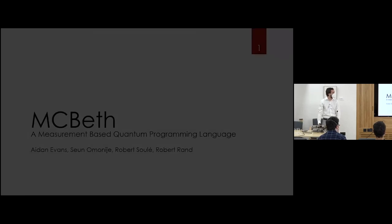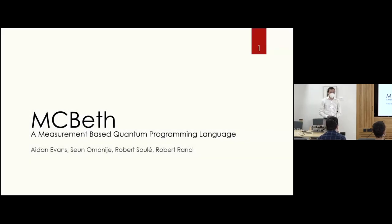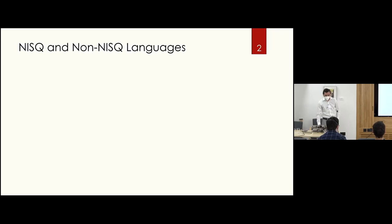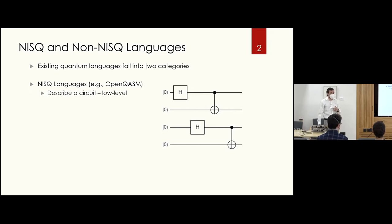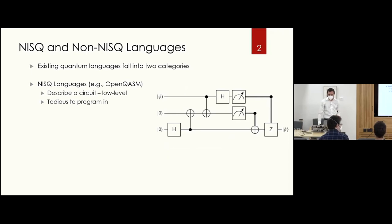Next up we have Aidan Evans talking about MACBETH, a measurement-based quantum programming language. There are many quantum languages and these fall into two categories. First, NISC languages such as OpenQASM describe circuits at a very low-level representation; they are also quite tedious to program in. For example, a standard teleportation circuit has a Hadamard, a couple of CNOTs, another Hadamard — it's very verbose and it's not clear at first glance that it entangles three qubits.